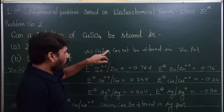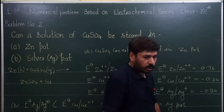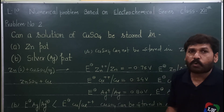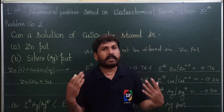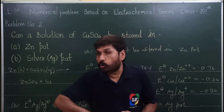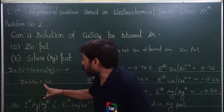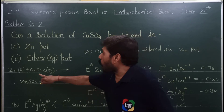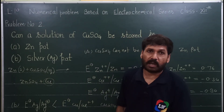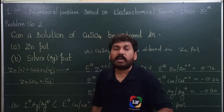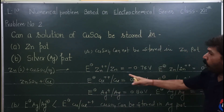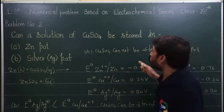तो summary: CuSO4 cannot be stored in zinc pot लेकिन CuSO4 can be stored in silver pot। यह depend करता है oxidation potential पर। Standard reduction potential याद है तो oxidation potential में convert करने के लिए बस sign change करना है। जिसका oxidation potential ज़्यादा, वो reactive metal — उसके pot में दूसरी metal का solution store नहीं होगा। जैसे zinc active है, copper sulfate में से copper को displace कर देता है और zinc sulfate बन जाता है।